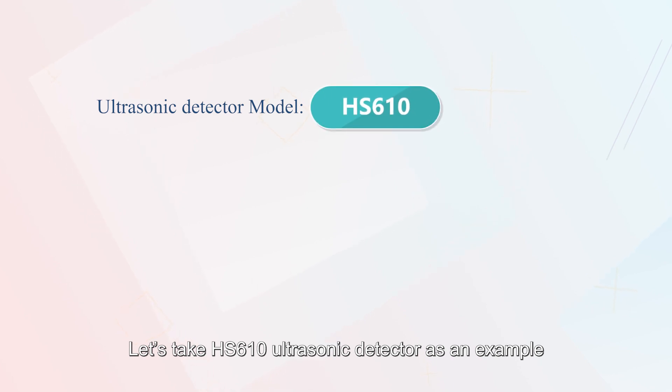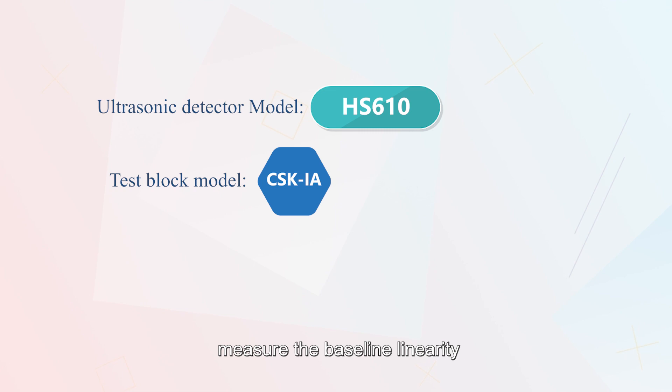Let's take HS610 ultrasonic detector as an example to explain how to draw DAC curve. First, measure the baseline, linearity, and angle probe k-value on the CSK-IA test block.